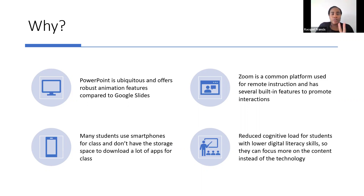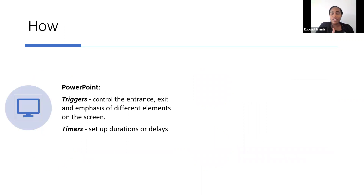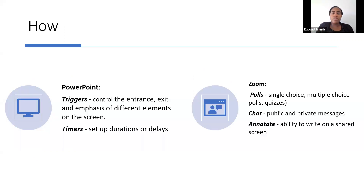That's why I chose these two tools: PowerPoint for the triggers I can use to control when something appears, disappears, or is emphasized; and timers to automate the process so I'm not clicking all the time. Then, of course, Zoom's interactive features. You've already seen one today — polls, which can include single choice, multiple choice, and on updated devices you can do quizzes similar to Google Forms. You also have private and public chat messages, as well as the ability to annotate or write on the screen.